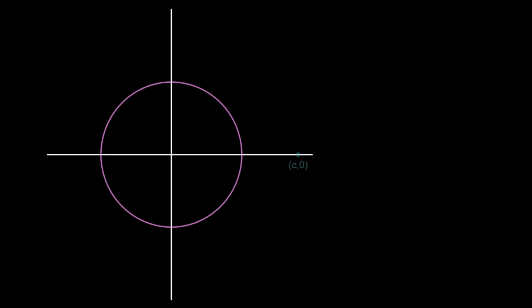Let's start off with a circle with an x and a y axis. We'll pick a point outside that circle and call it (c, 0), and draw a triangle. This is not a right-angle triangle — this angle is greater than a right angle and both these other angles are less. The angles will have large letters and the lengths will have small letters. We'll call this large angle A, the length opposite it small a, this length b, and this length c.